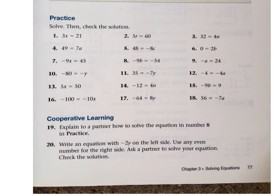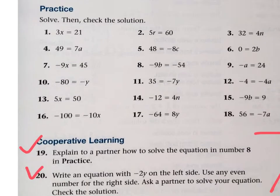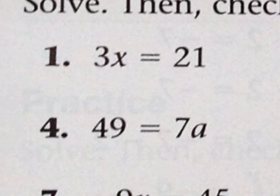We're going to be turning to page 77. You're going to work with your partner or individually on numbers 1 through 18, and then we're going to do cooperative learning with another member for numbers 19 and 21. Let's take a look at number 1. I can see it says 3x equals 21.